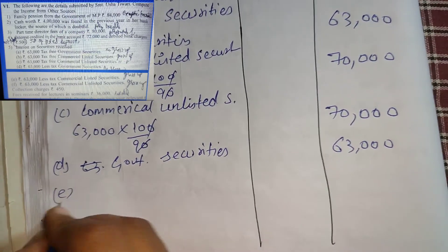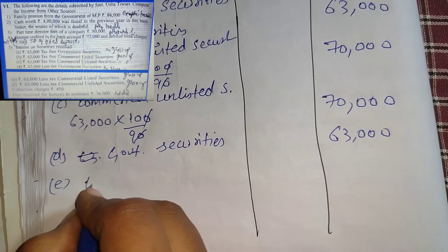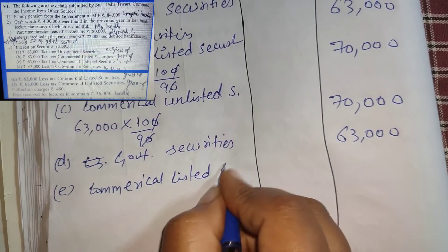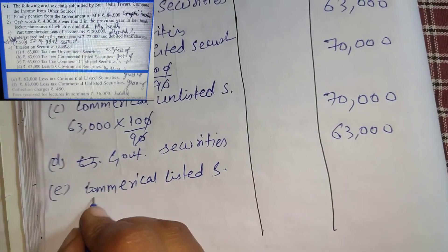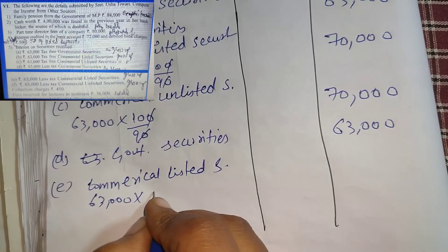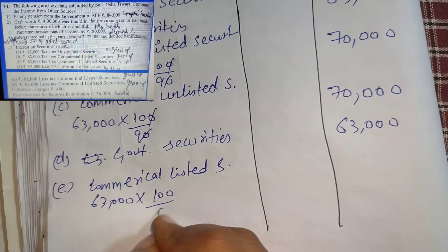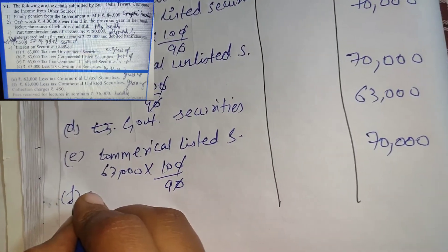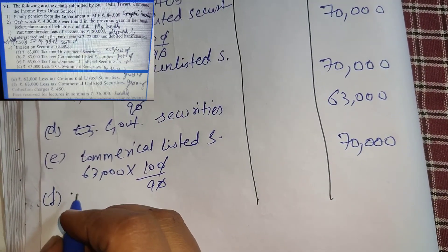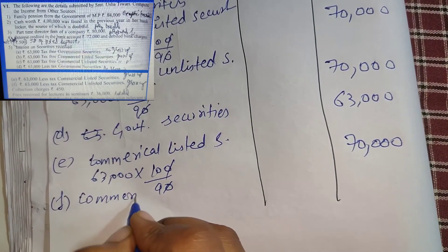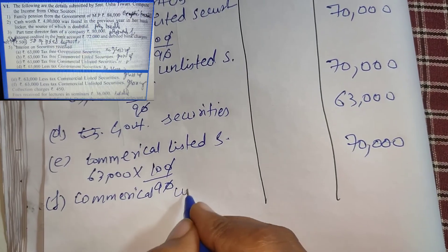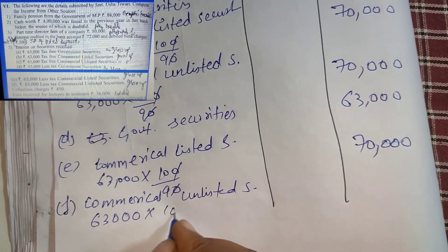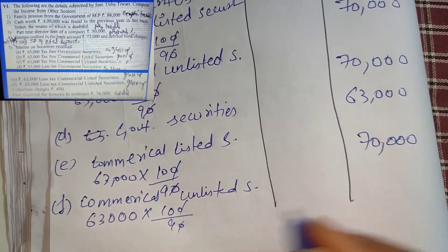63,000 less-tax commercial listed securities — not government securities, so we gross up: 63,000 × 100/90 = 70,000. Next, 63,000 less-tax commercial unlisted securities — unlisted, again grossed up: 63,000 × 100/90 = 70,000.